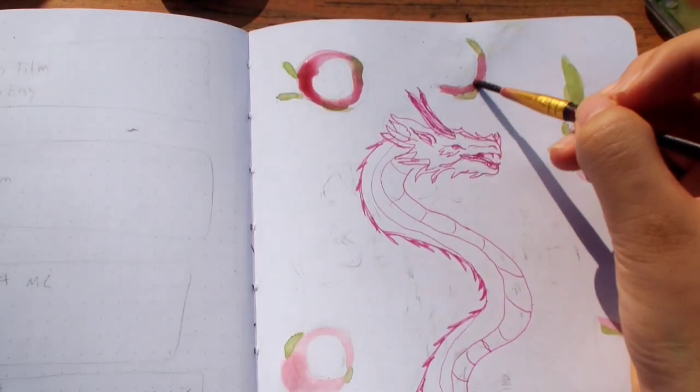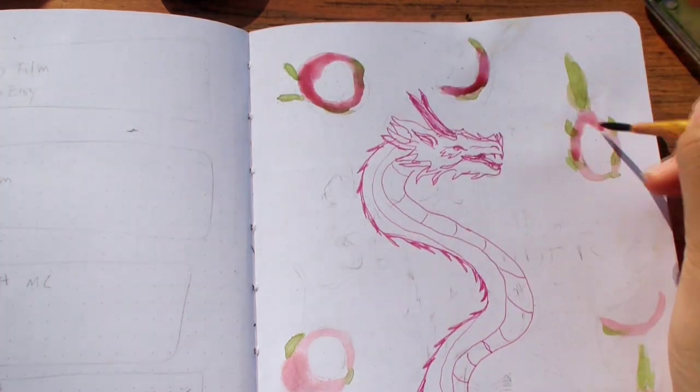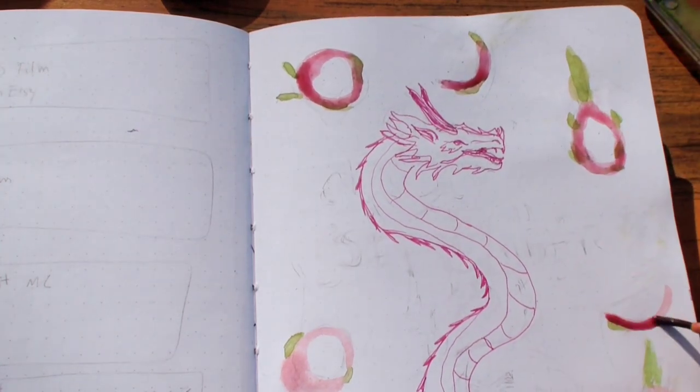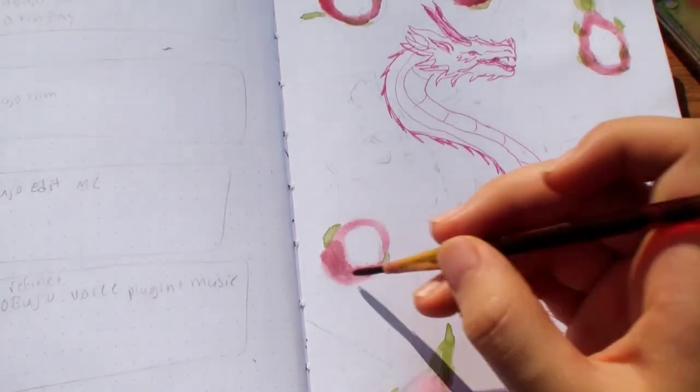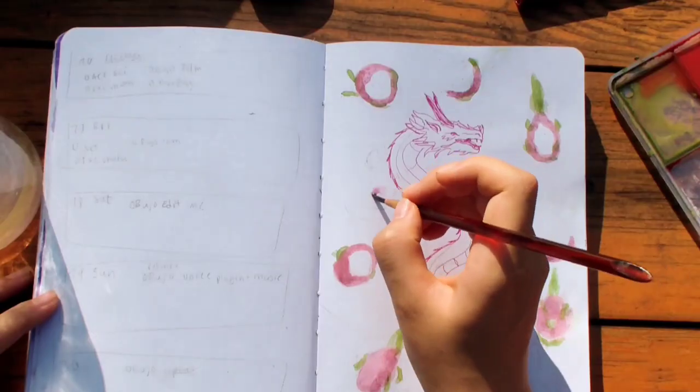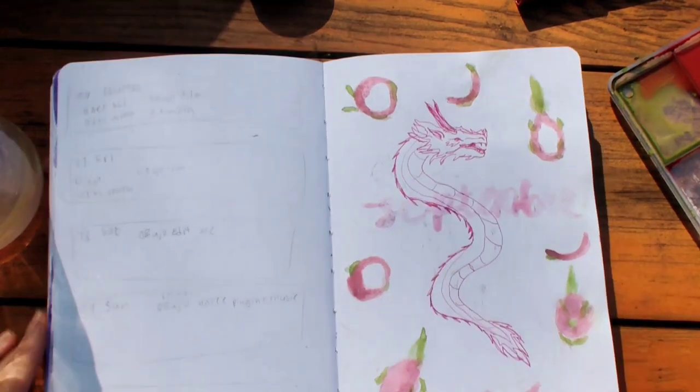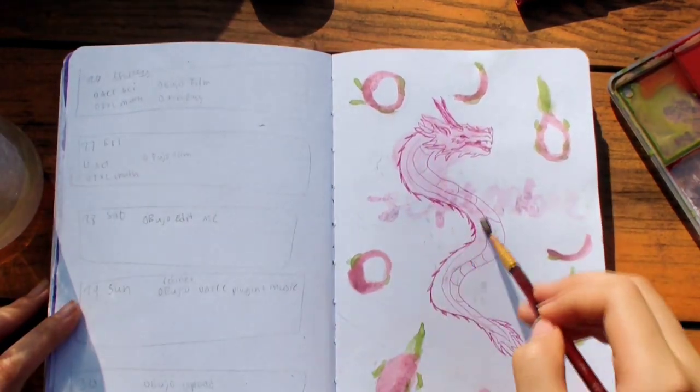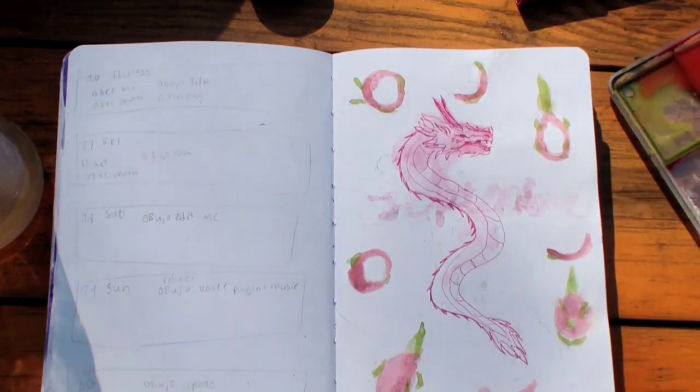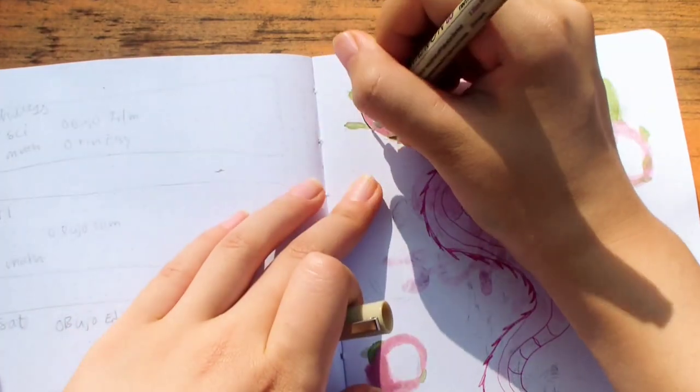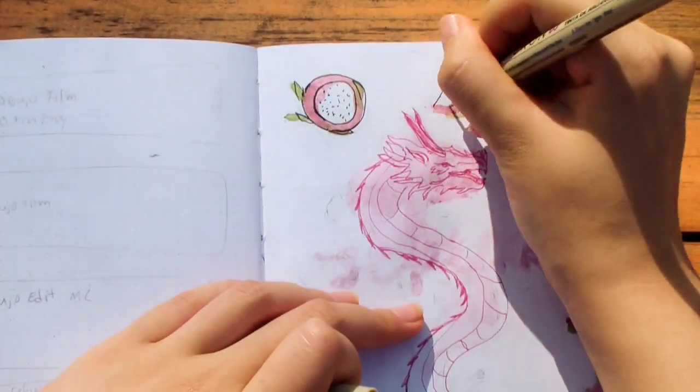Anyways, I'm moving on to the second layer of watercolors. For this, I'm using the same magenta colors and I'm just applying it on top to make it a darker color. In the middle, I'm writing September in watercolor. I also added some watercolor to the dragon in the middle so that it would have some colors to it. I tried to make it a gradient by making the head darker than the tail.